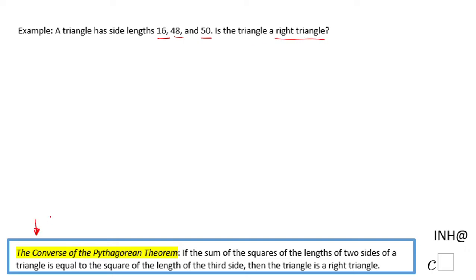For that reason, I'm going to use what is called the converse of the Pythagorean theorem, which says if the sum of the squares of the lengths of two sides of a triangle is equal to the square of the length of the third side, then the triangle is a right triangle.